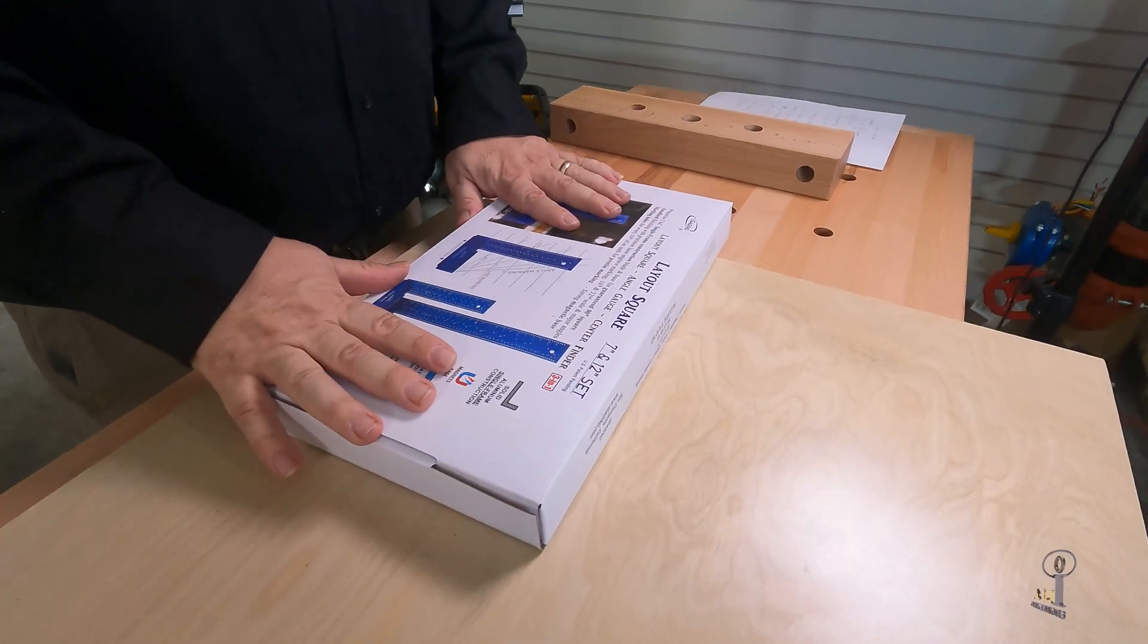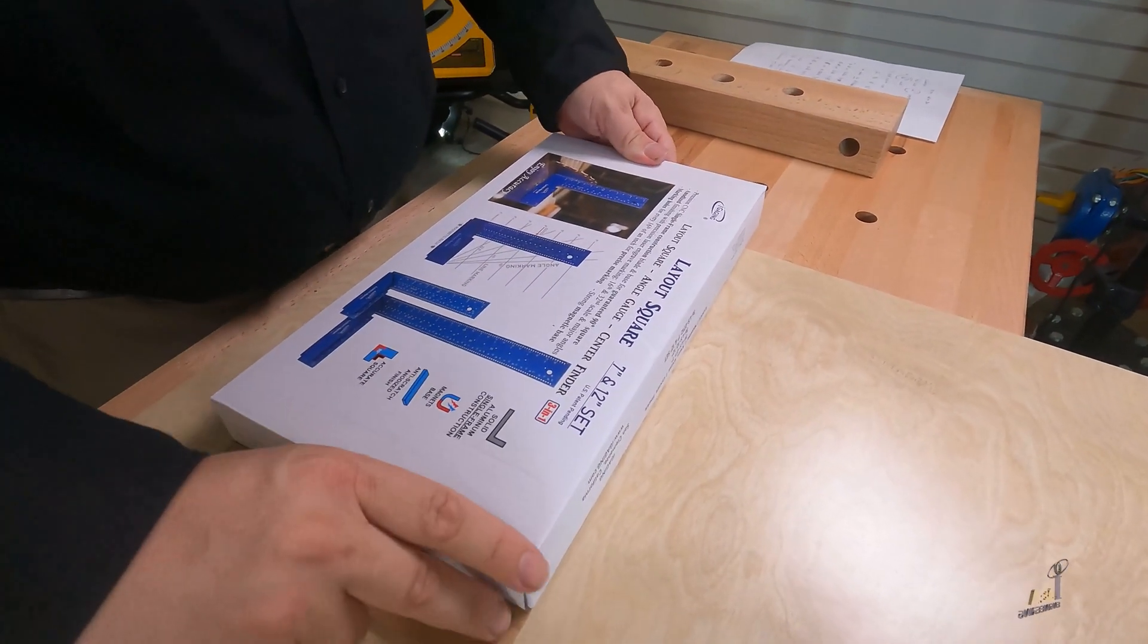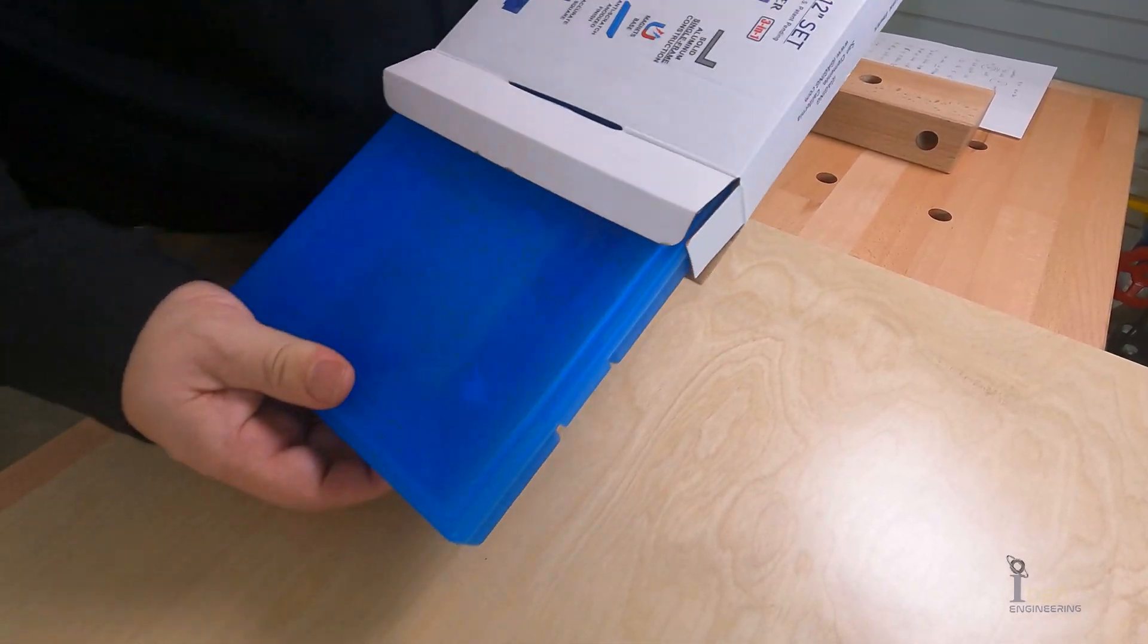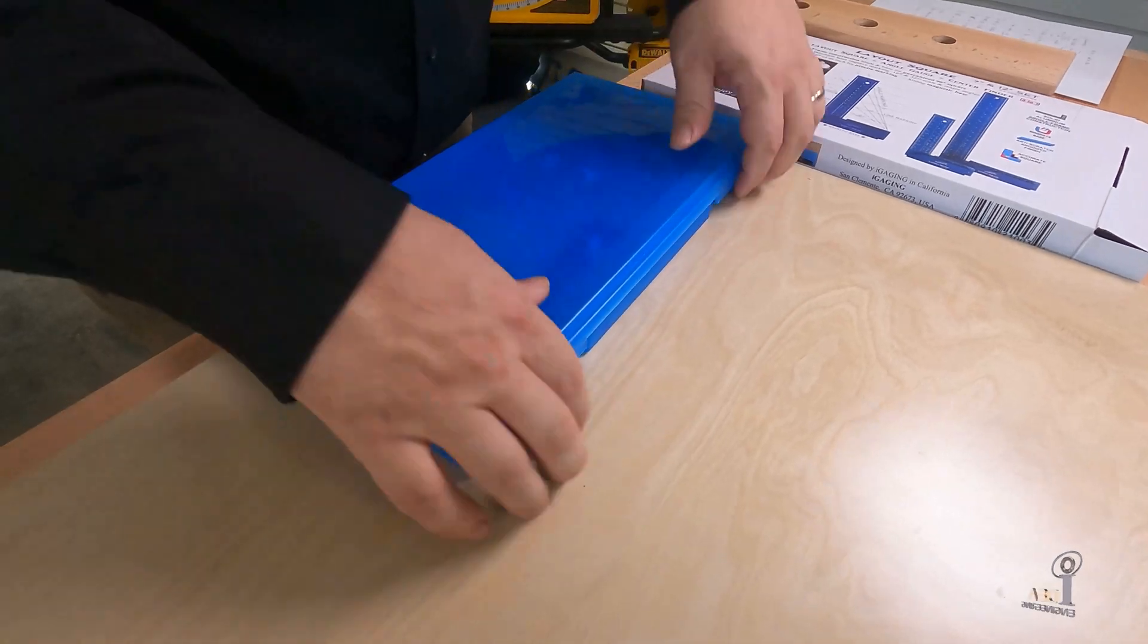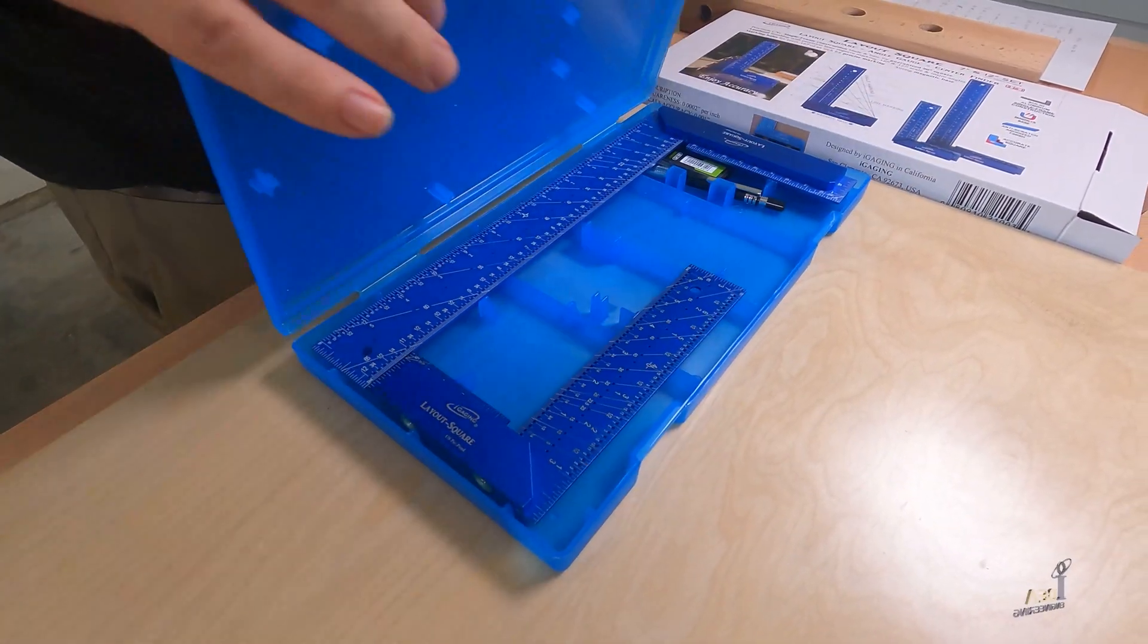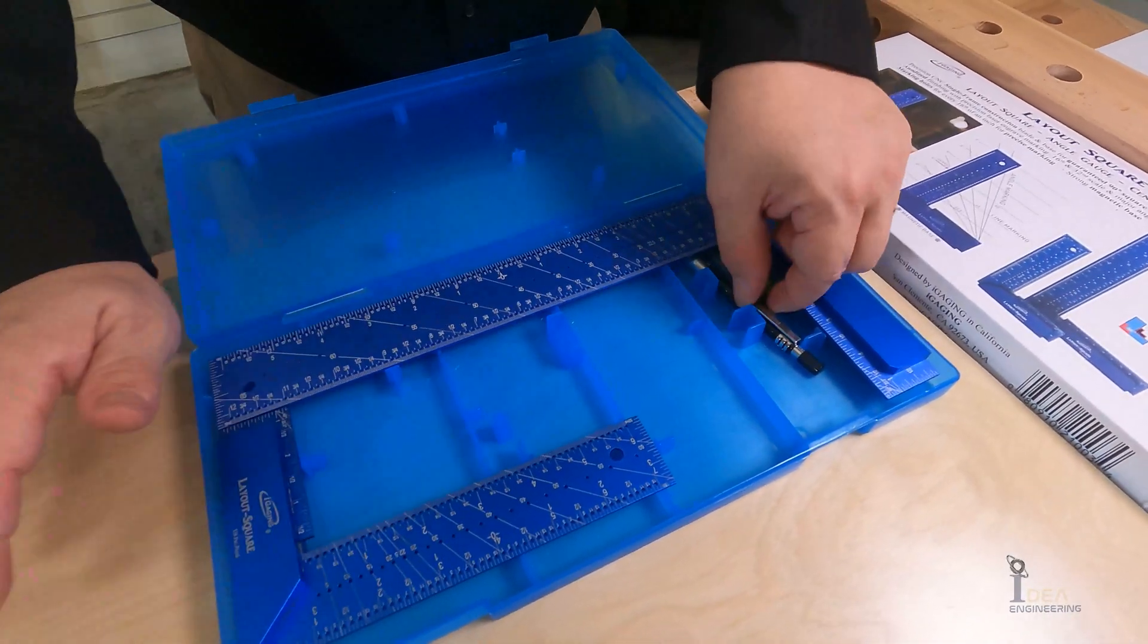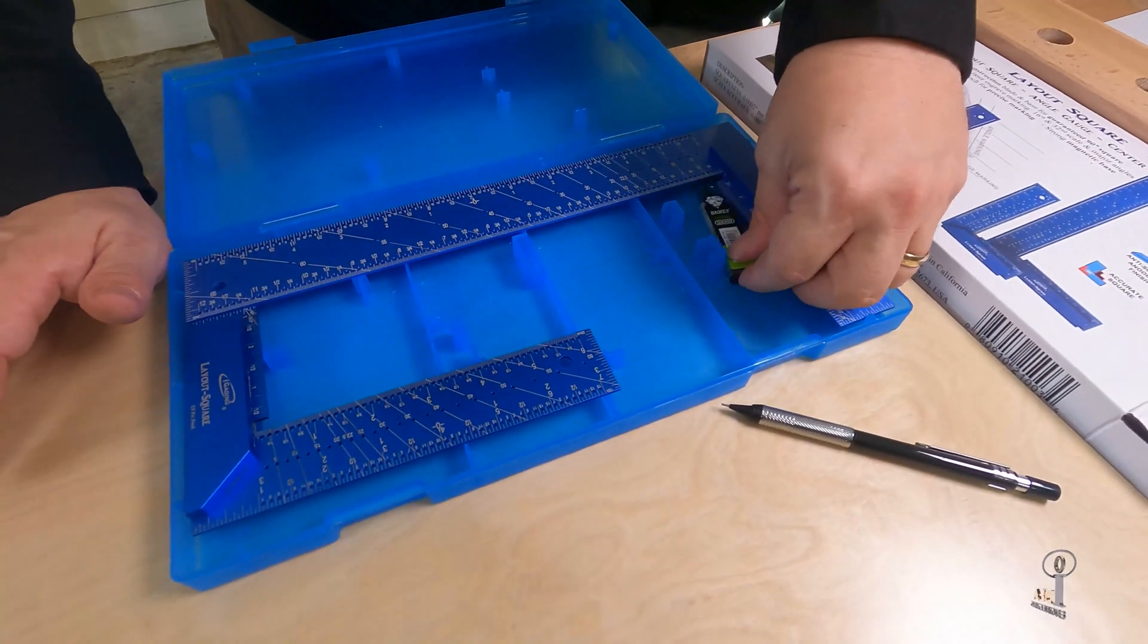Okay, so here we've got the actual set. You can buy these individually, but the nice thing about getting a set is you actually get a free mechanical pencil and extra lead. Let's open this up. So here's your 12-inch and your 6-inch, and then your mechanical pencil and the extra lead.